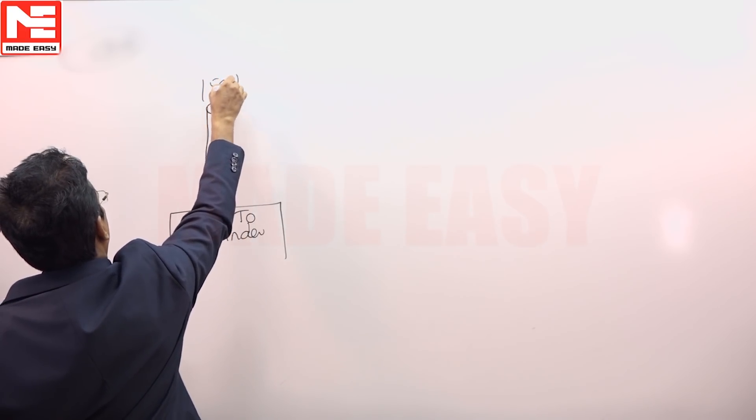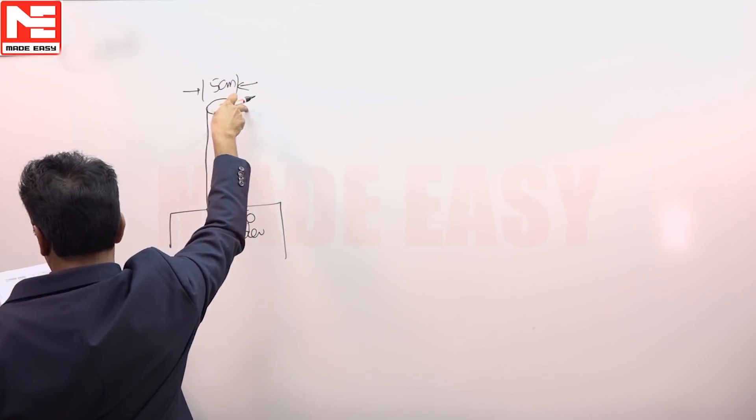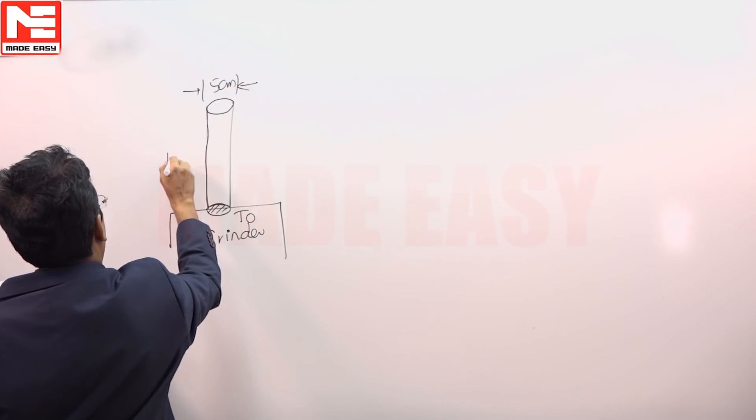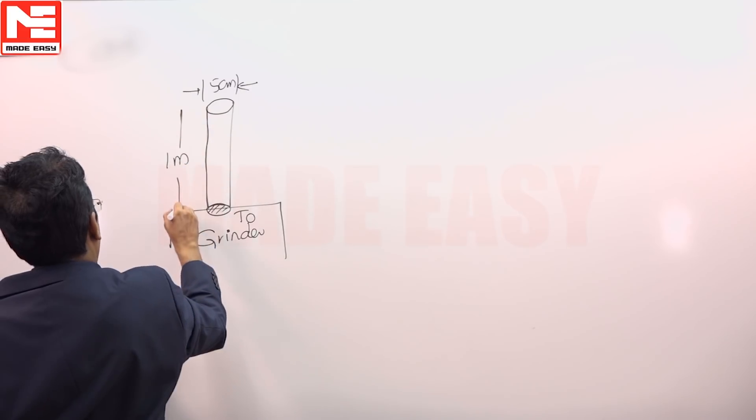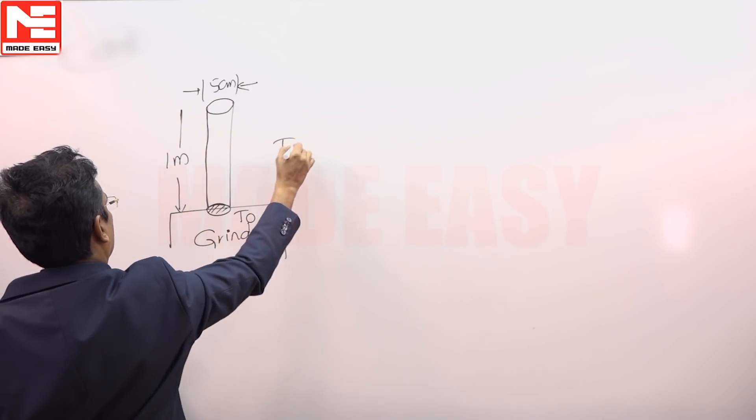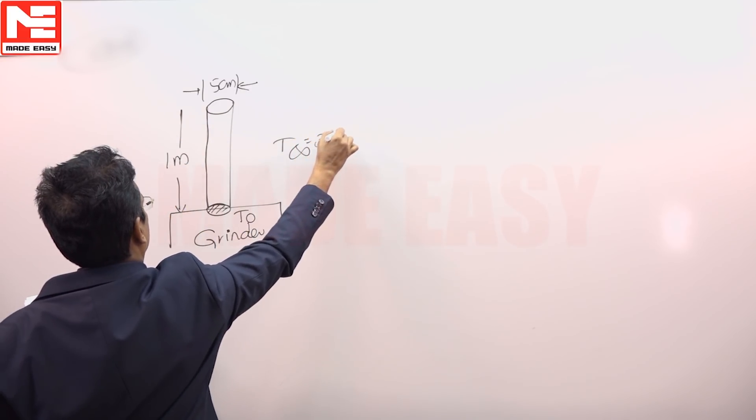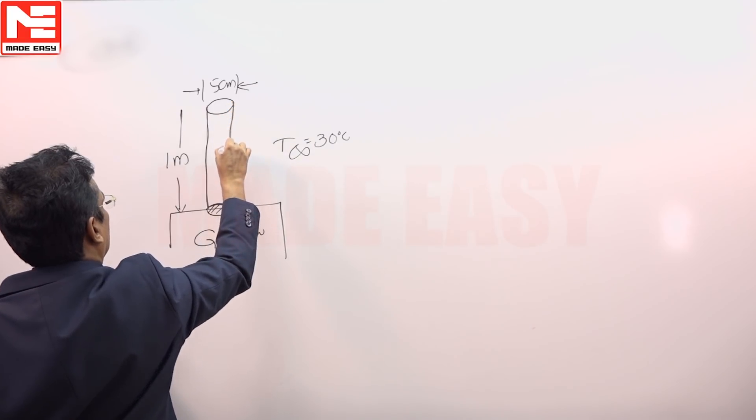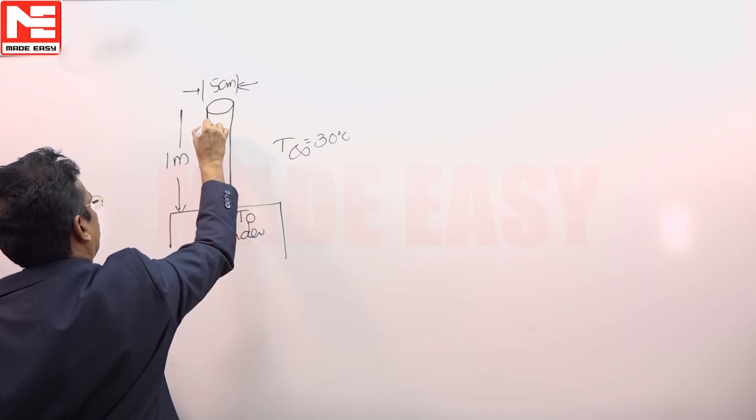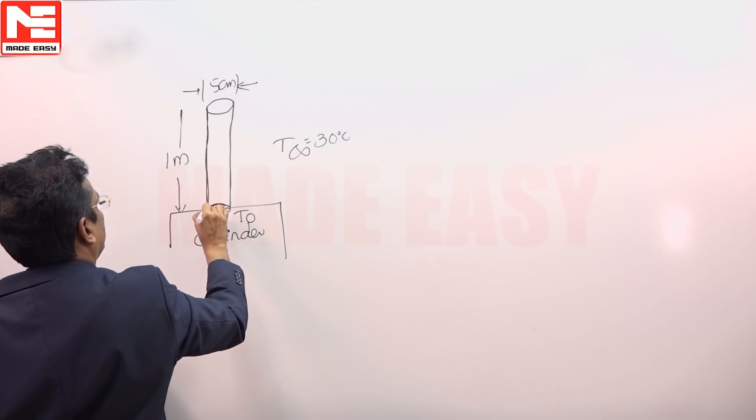We can treat this as a fin, a pin fin having a diameter 5 centimeters and the length of the rod is 1 meter and the T ambient is 30 degrees Celsius. A long rod, the length of the rod was given, it is being a grinder.